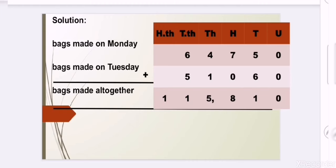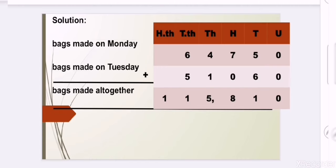We write the first statement: bags made on Monday were 64,750. We start writing the values from the right-hand side — under units: 0, 5, 7, 4, 6. Then the next statement: bags made on Tuesday is 51,060. Again from the right: 0 under units, 6 under tens, 0 under hundreds, 1 under thousands, and 5 under ten thousands. Next is bags made all together.